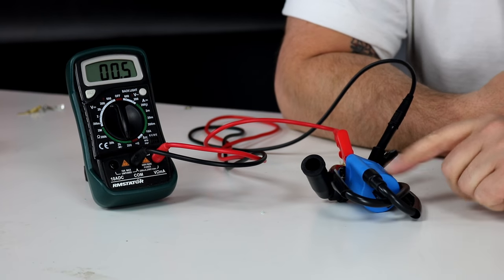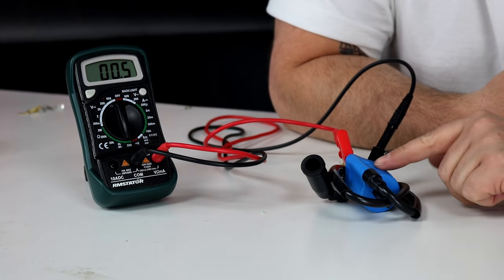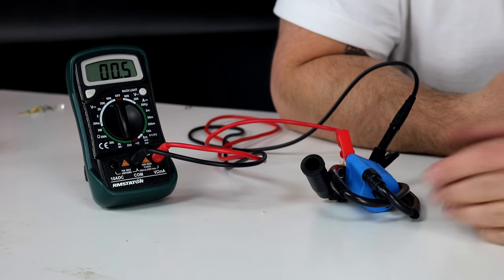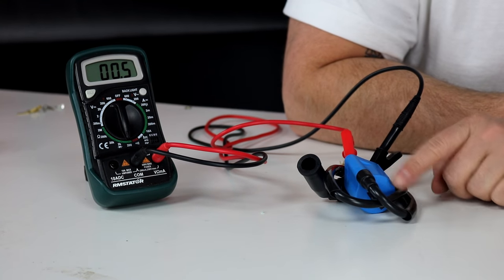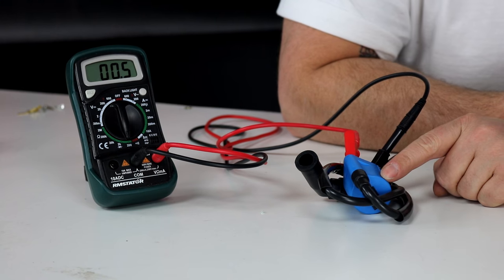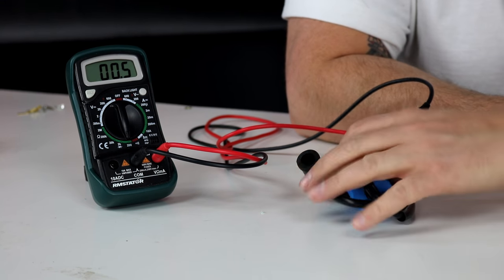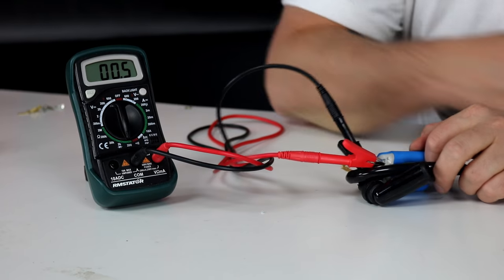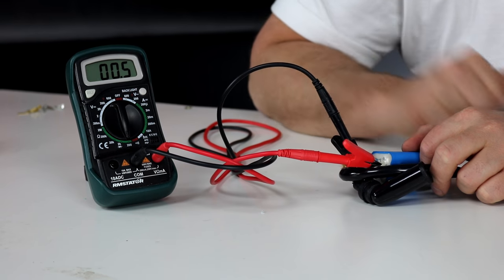We're going to start with a simple single spark plug ignition coil. These coils have two coils inside of them, a primary and a secondary. The primary we can always test between—there'll be some sort of wire coming out or a terminal, at least one if not two.